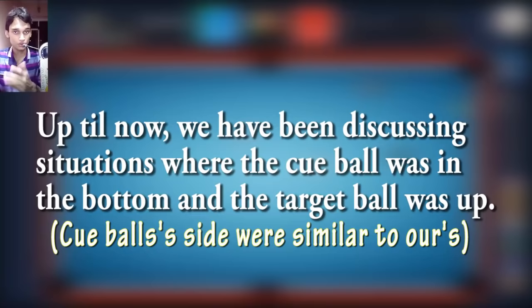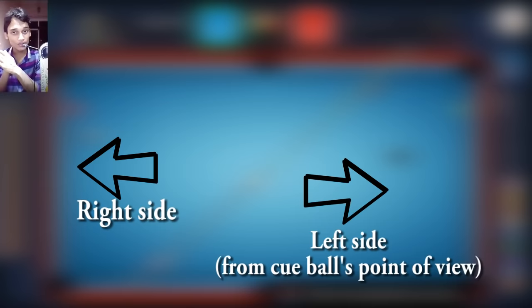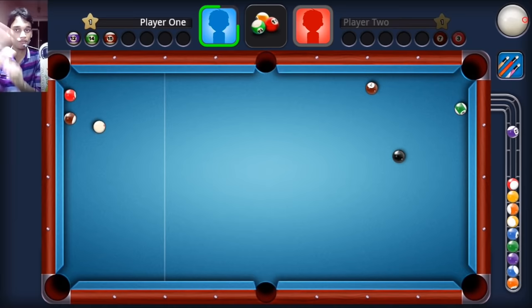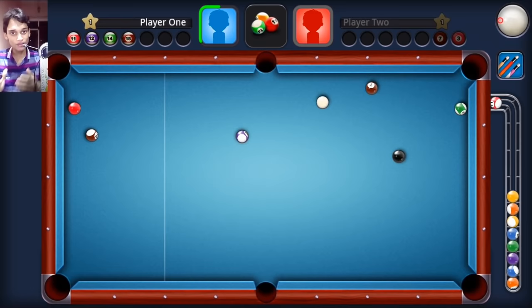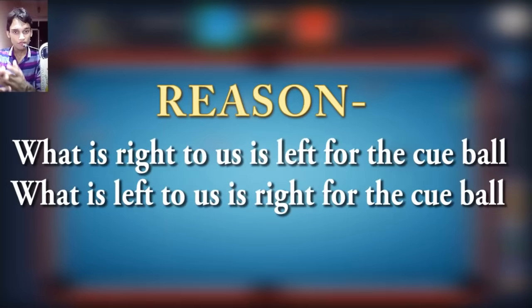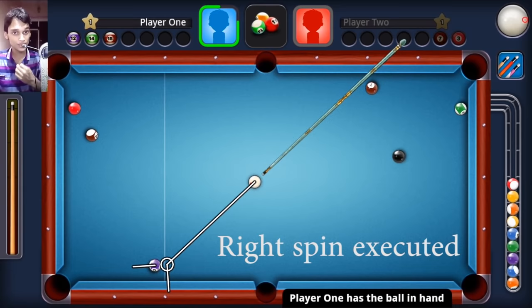Now this is where it gets a bit trickier. In the situations we discussed earlier, the cue ball was on the bottom of the table and the balls we were hitting were on the top. Now if the situation is opposite — the cue ball is on the top of the table and the ball you're hitting is on the bottom rail — the spins will work exactly in an opposite manner. If you want to bring the cue ball to the left, you have to use right spin, and if you want to bring it to the right, you have to use left spin — it's the vice versa. From our point of view, this is the right-hand side of the cue ball and this is the left. But from the cue ball's point of view, if you turn your phone 180 degrees, you'll find that it's just the opposite. This is the reason we reverse the spins if the cue ball is on the top of the table.